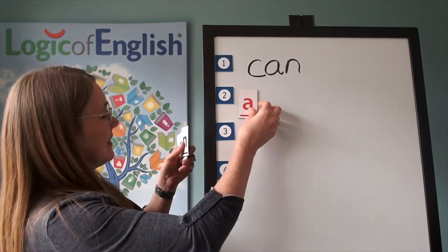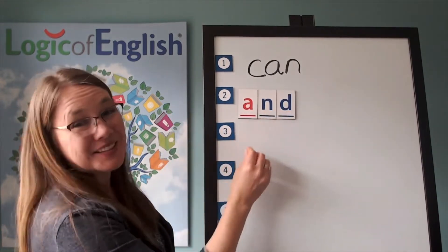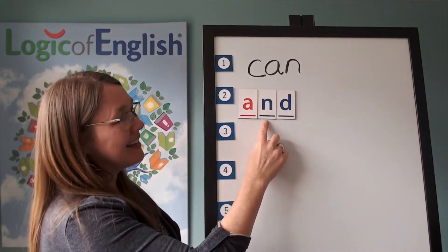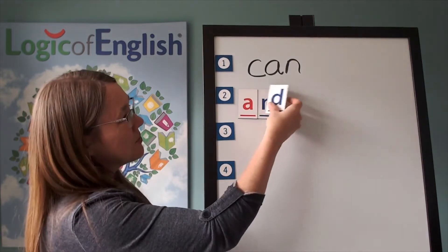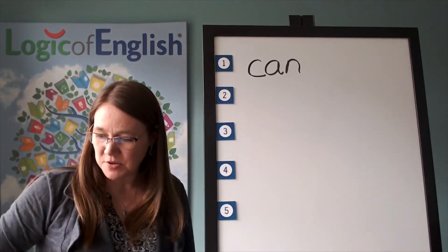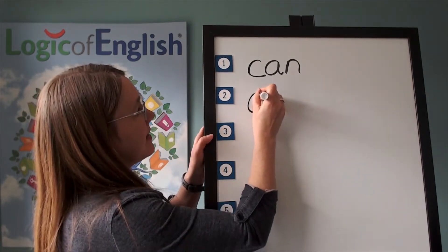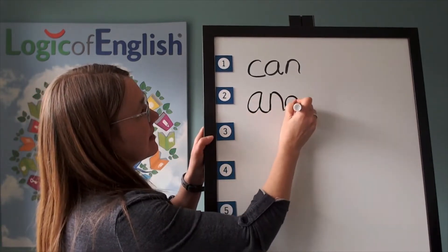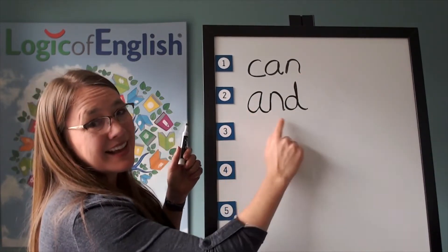Now help me write it. A-N-D. Let's read it. A-N-D. And. That's a cool word. Now I'm going to write it with my marker. Sound it out again. A-N-D. Help me to read it. A-N-D. And.